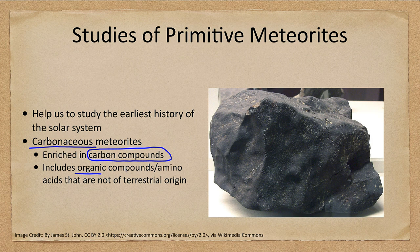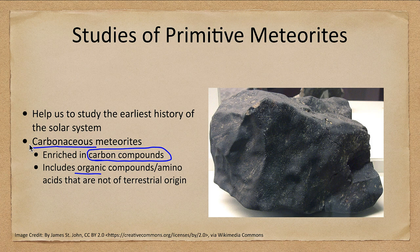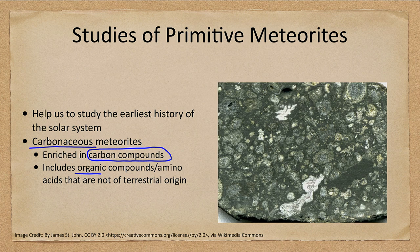Carbonaceous meteorites are enriched in carbon compounds, including organic compounds and amino acids — the building blocks of life — of non-terrestrial origin. This doesn't mean life exists on meteorites, but it does mean the building blocks of life are relatively easy to form. These primitive meteorites preserve material left behind from the origin of the solar system four and a half billion years ago, which we'll explore in more detail in a later chapter.